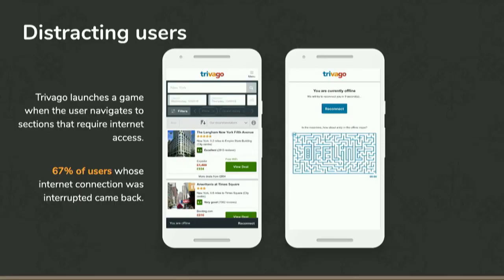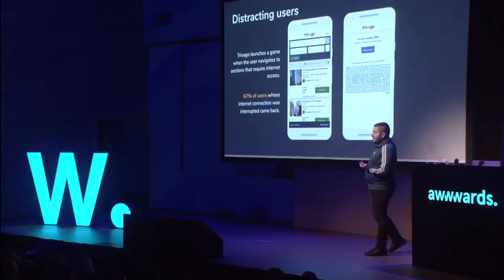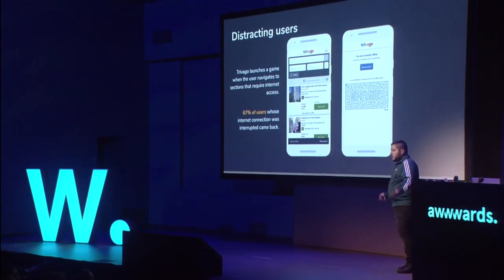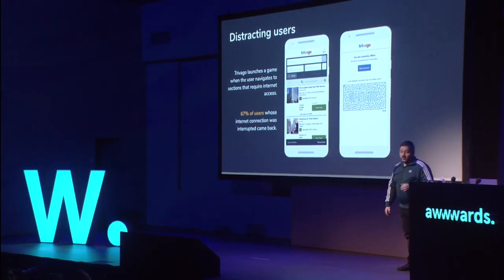Distracting users: when Trivago's site goes offline, you get a fun little game. They'll say, don't worry, your settings are saved, we're going to get you back online. And what they found is 67% of users came back to the experience. That's quite powerful — try pitching that to your boss: we're going to work on a fun game. But it worked. These are the things we need to start doing more of.